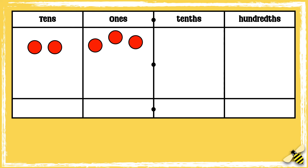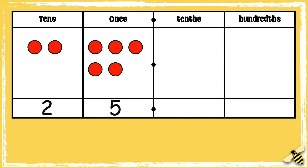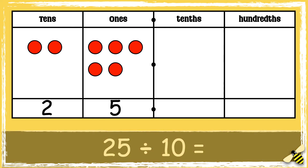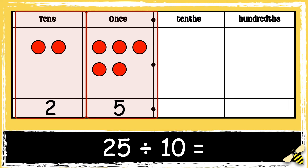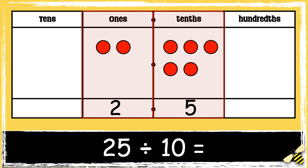Now let's have a look at two-digit numbers divided by ten. Here is the number 25. When we divide two-digit numbers by ten, both digits need to move one place to the right. So five ones becomes five tenths, and two tens becomes two ones, so the answer is 2.5.